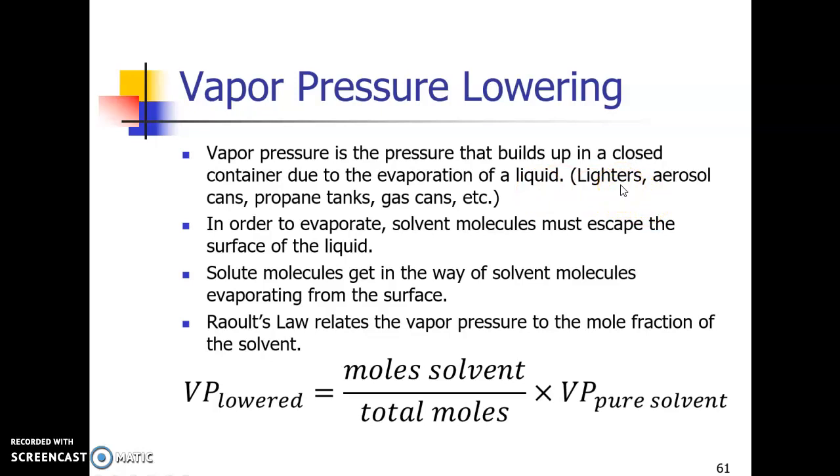Lighters that contain butane, you press the button, it lets the gas out, the liquid in the container evaporates. Sometimes you can actually see it bubble as the gas is escaping, and that evaporation produces the pressure that pressurizes the lighter. Something similar happens inside of aerosol cans. Propane tanks are another example, and if you've ever taken the lid off of a gas can when it was hot or something, you might have heard a pshh, and that was the vapor pressure from the evaporation of that gas being released.